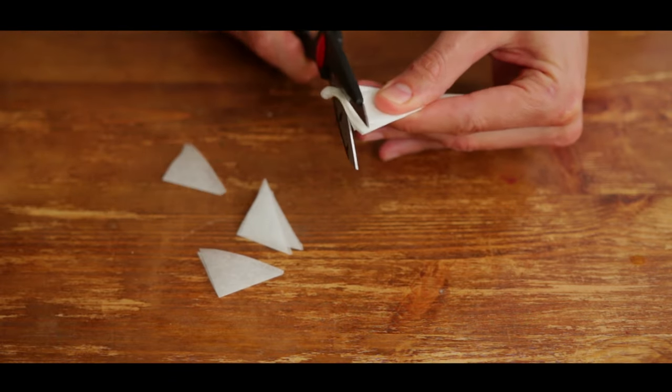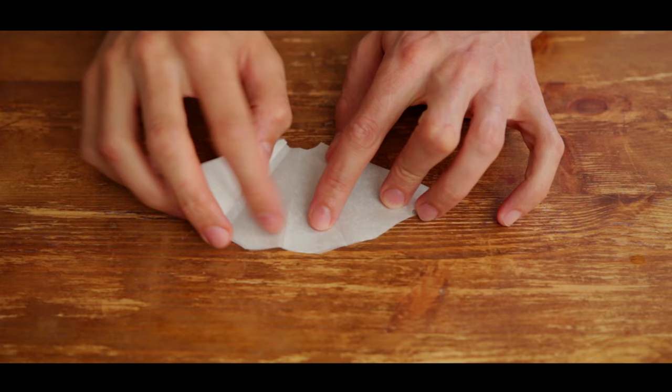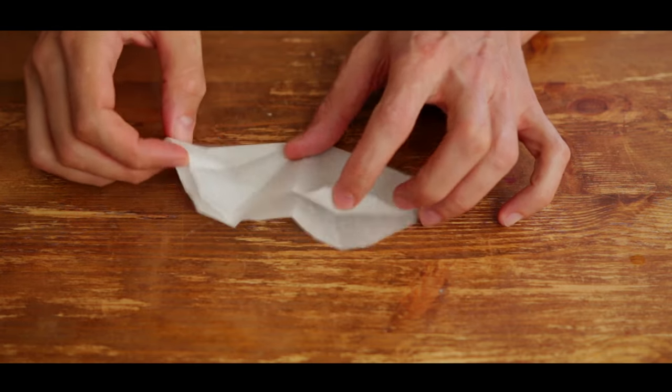Now cut off both ends. When you unfold it, you're left with a round shape with a small hole in the center.